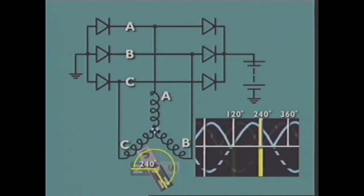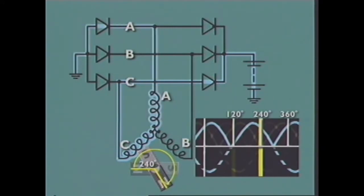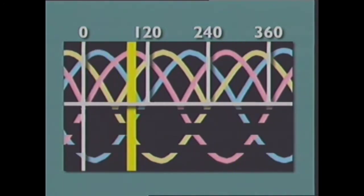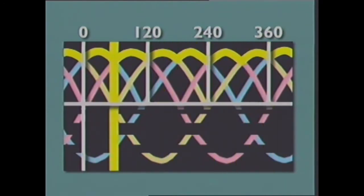When the magnet rotates further to this position, the polarity of winding A changes. The current path then is: winding A at star point, winding C, positive diode C, alternator terminal B plus, battery positive terminal, battery ground, alternator ground, negative diode A, and output of winding A. As the rotor moves through its various positions, individual phase currents change in magnitude and polarity, but the output current to the battery and the electrical circuits remains unidirectional.